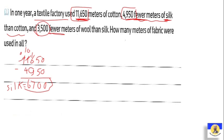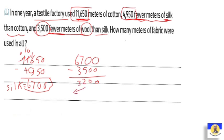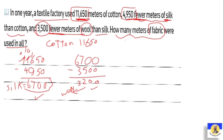And 3,500 fewer meters of wool than silk. The wool is a little less than silk, so we take 6,700 minus 3,500, and the answer is 3,200. So we have: cotton 11,650, silk 6,700, and wool 3,200. How many meters of fabric were used in all? We need to add them all together: 11,650 plus 6,700 plus 3,200.